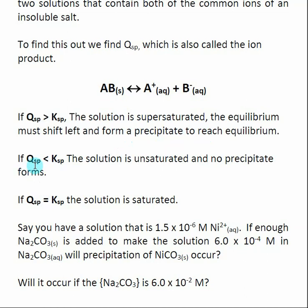When Qsp is less than Ksp, it means we have an unsaturated solution. We don't have a large enough concentration of the ions in solution to create a precipitate, so no precipitate forms.